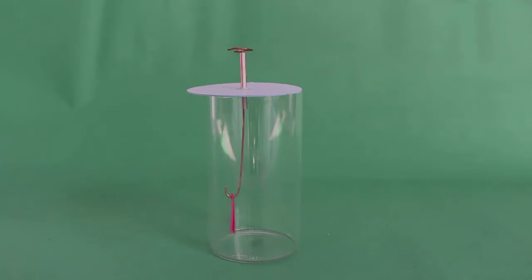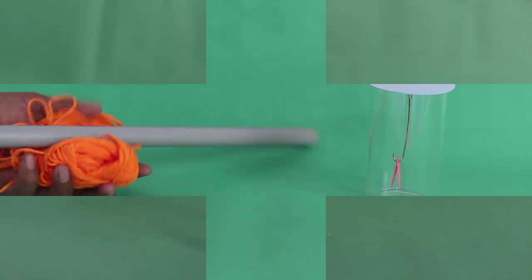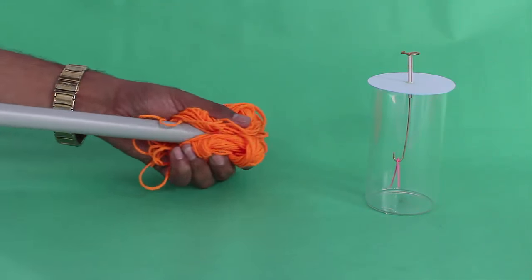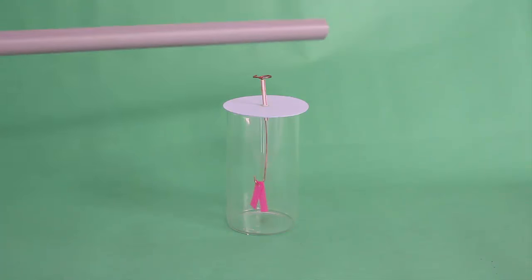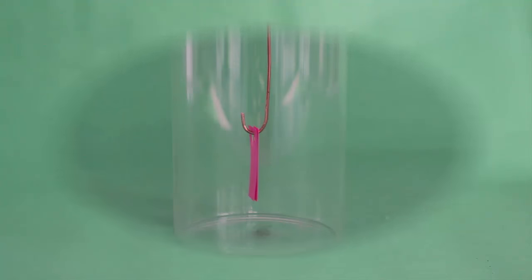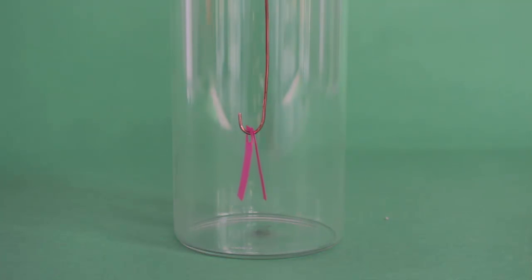Rub a piece of PVC pipe with wool. Soon the pipe will acquire an electrical charge. Bring the charged pipe close to the wire circle. Do not touch it. The charge from the pipe will travel through the copper wire to the hanging paper strips.